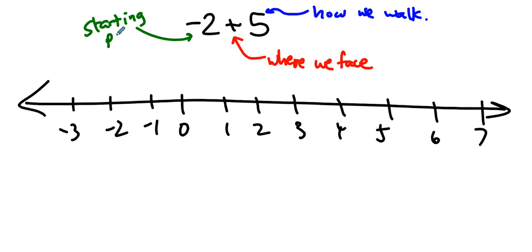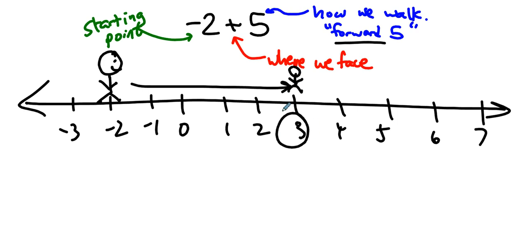-2 is our starting point. We start on -2. We face the positive end of the number line, so we're looking this way. How do we walk? We walk forward 5. This is forward 5. So that means 1, 2, 3, 4, 5 - not necessarily to the right, forward. We're walking forward 5 from this spot, and that ends us up here at 3.